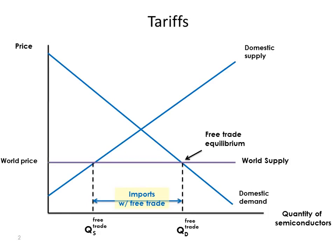If a country can buy as much as it wants at the world price, the equilibrium — the free trade equilibrium — has this quantity demanded.